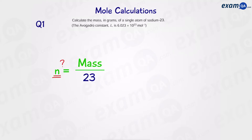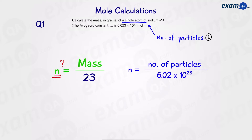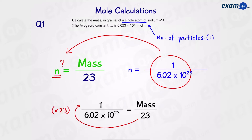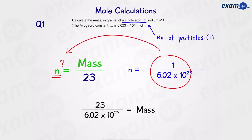However, we haven't been given the number of moles. Instead, we've been given the number of particles — in this case, one sodium atom. That means to work out moles we can use our other equation: moles is equal to particles over Avogadro's constant. So the number of moles will be 1 over Avogadro's constant. We can place all of this over here, then times through by 23, and that should give us the mass, which is 3.82 times 10 to the power of minus 23.